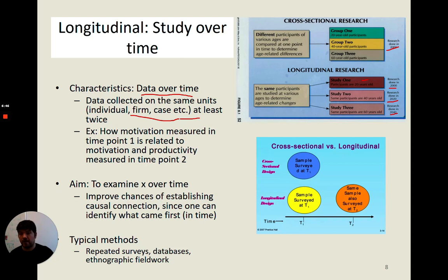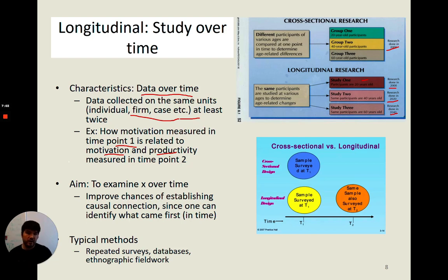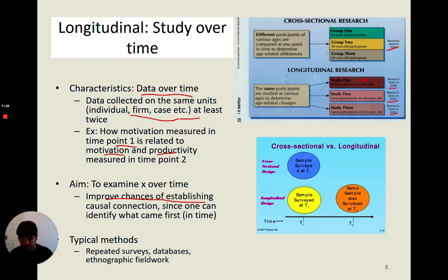So we could, for instance, have data on the motivation of employees at time point one in January 2021, and then look at how motivated and productive they are in February 2021. This might enable us to say it's actually the motivation at a prior time point that explains productivity at a later point in time. This improves our chances of establishing some kind of causal connection because we can identify what came first. In a cross-sectional setup, because it's a snapshot taken at one point in time, we can't tell what came first — it's basically not possible, at least not if we just go by the data we have.